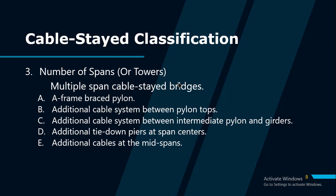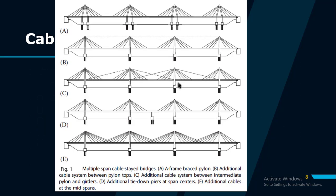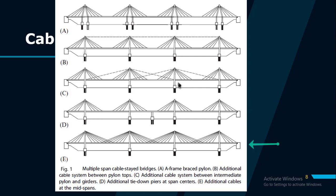When a bridge has more than three spans, the main problem is the lack of longitudinal restraint to the top of the intermediate pylons, which cannot be directly anchored to an approach pier, and large deformations can occur under live load. This problem can be solved by: (a) increasing the stiffness of pylons using an A-frame or braced pylon; (b) using additional horizontal cables between tower tops to transfer out-of-balance forces to anchor stays; (c) connecting the top of internal pylons to adjacent pylons at deck level; (d) using additional tie-down piers at span centers; or (e) adding additional cables at mid spans.